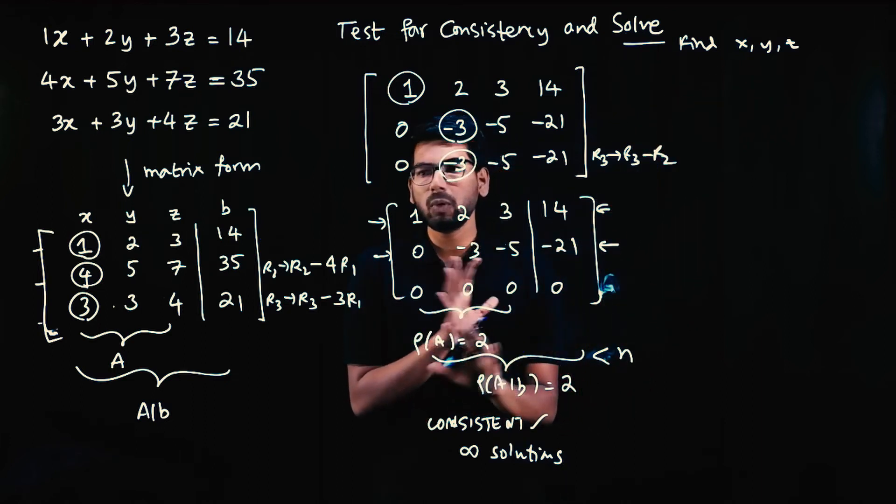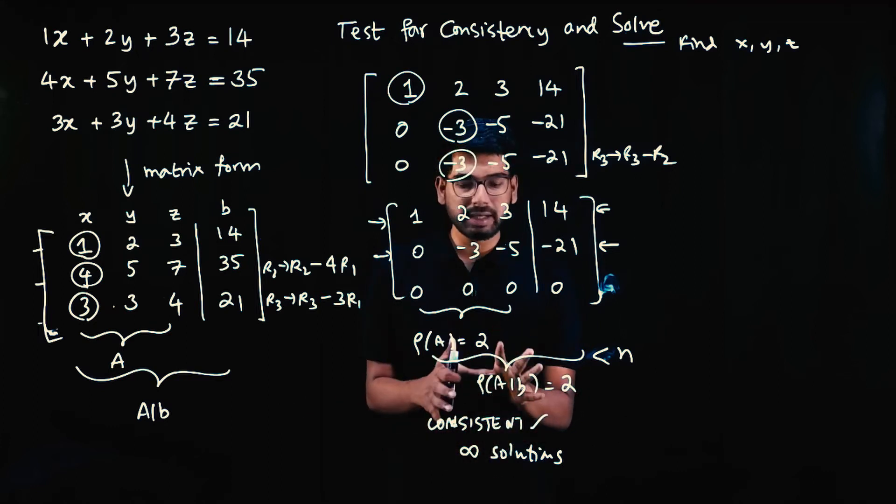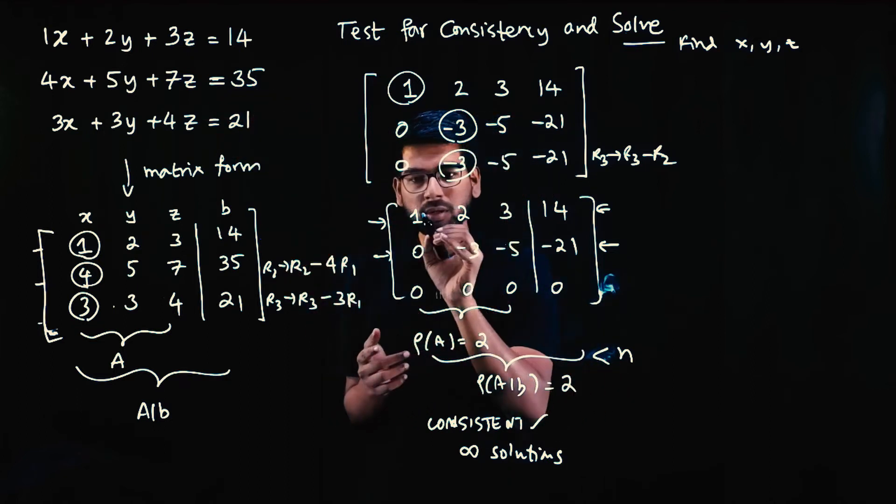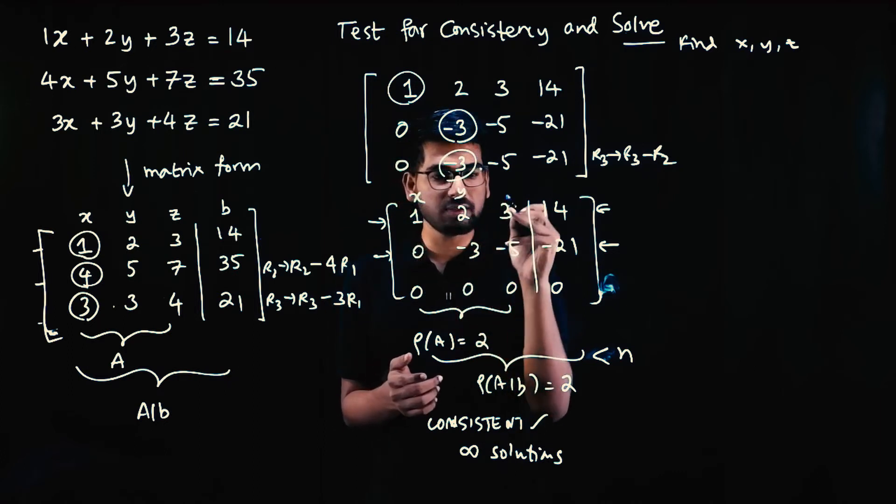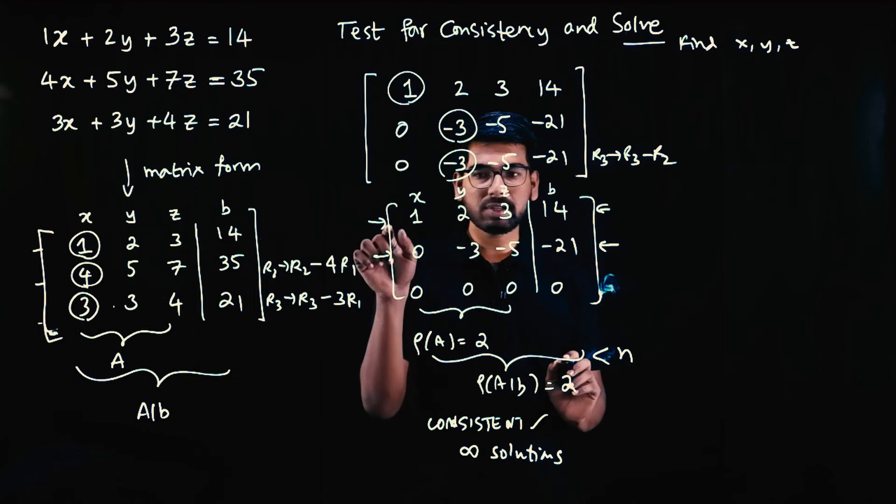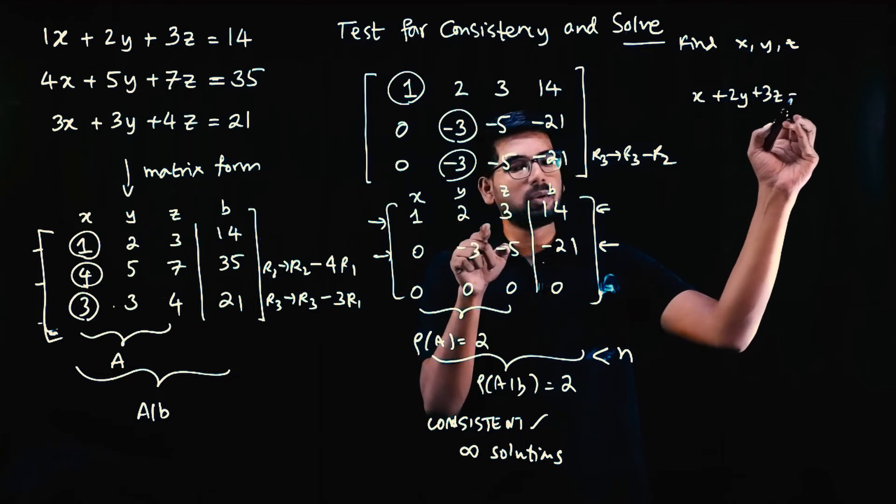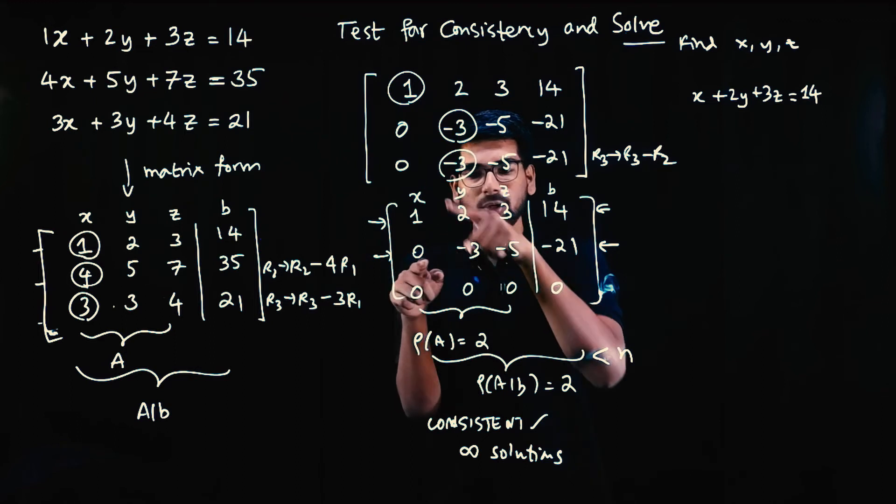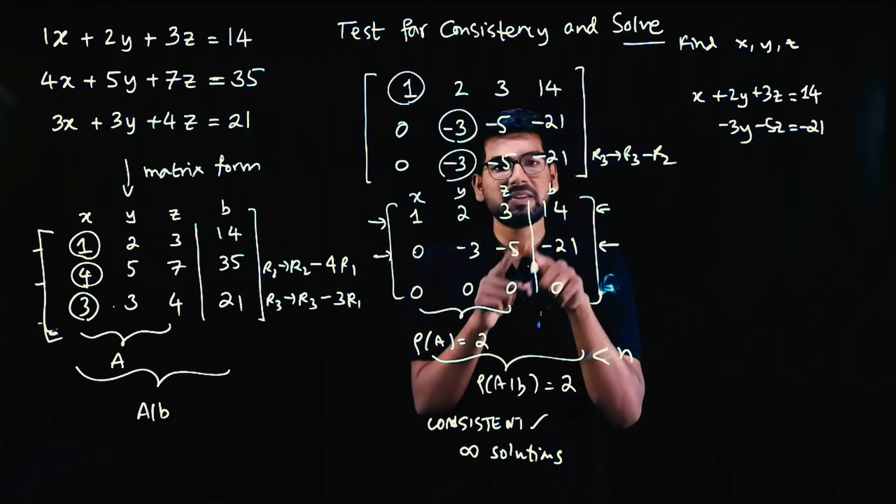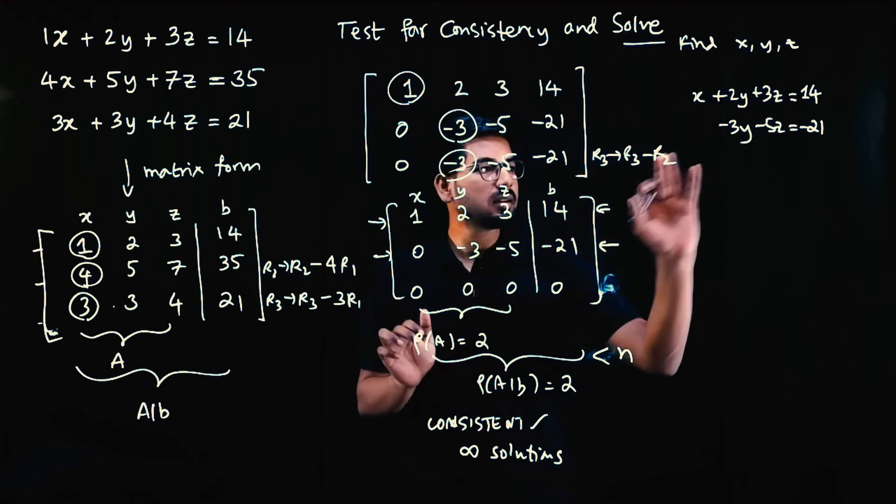To solve and find x, y, z, this is the first time doing this in engineering. How to find infinite solutions? First, convert this back to equation form. First column is x coefficients, second is y, third is z, fourth is RHS B values. First equation: 1x plus 2y plus 3z equals 14. Second equation: 0x minus 3y minus 5z equals minus 21. Third equation: 0x plus 0y plus 0z equals 0, we don't write this. Only two equations remain.